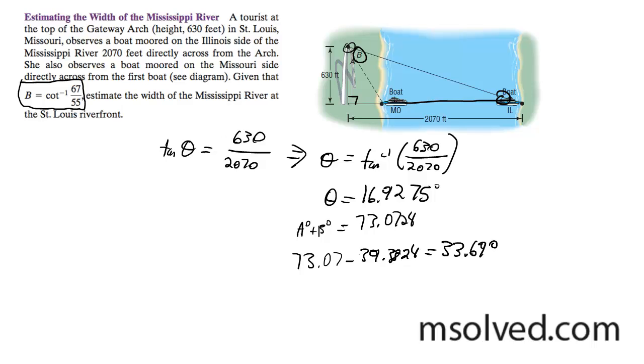Now I can find out the distance between this tower and the tip of our boat, which is supposed to be the edge of the Mississippi. Once I get that, I can subtract it from 2070 and I should get my answer.